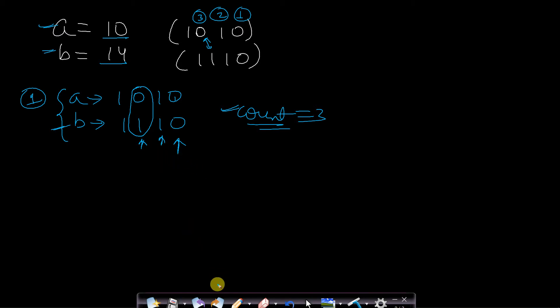Let us see an efficient approach to solve this problem. What will be the efficient approach? Our number was A equals to 10 and B equals to 14, and 10 was 1010 and 14 was 1110.